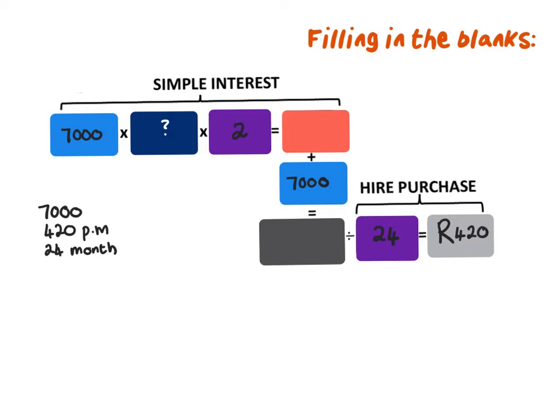Now let's work backwards to find the missing values. I have 420 Rand, and I know I got 420 by dividing by 24 months, so I can do the inverse operation and multiply to find the total repayment. If I do that, I get an amount of 10,080 Rand. So if the total repayment is 10,080 and my loan amount was 7,000, I can also work backwards to find the interest amount, and I do so by subtracting. That value is 3,080 Rand.